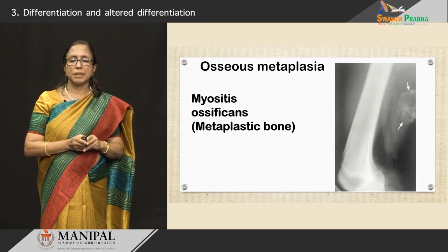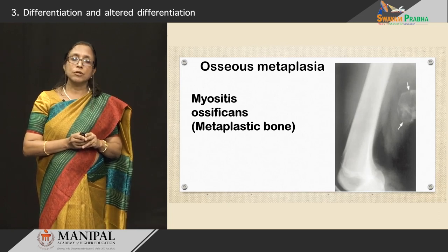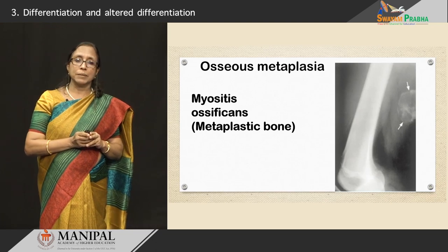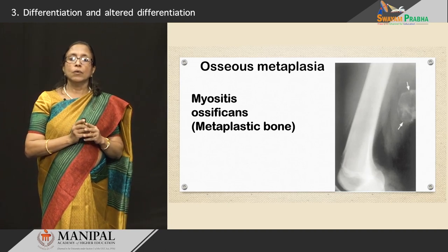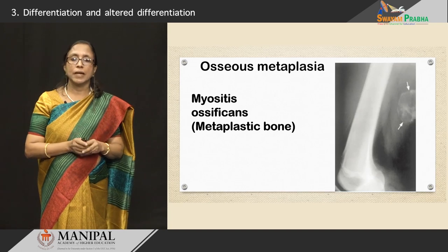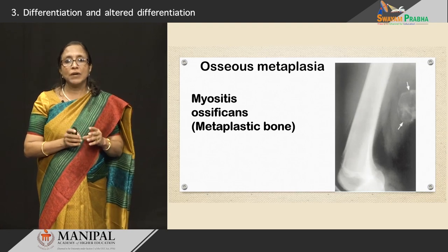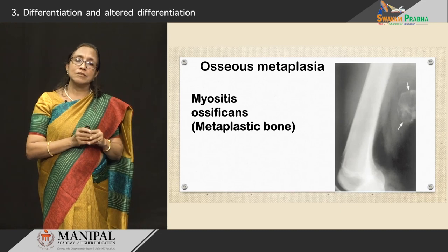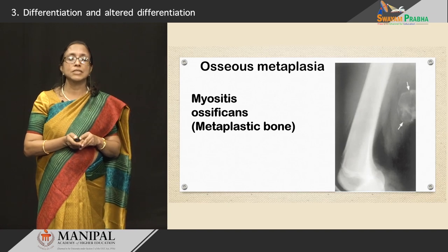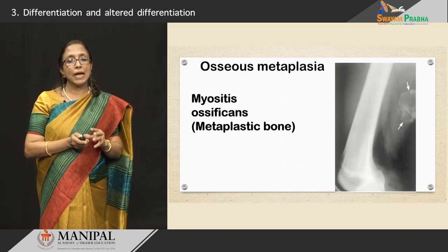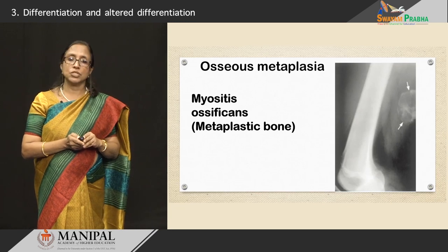Looking at mesenchymal metaplasia, an example is osseous metaplasia, and an example for that is myositis ossificans. Here it is a metaplastic bone. It can be seen in athletes and very active people where, in the proximity of the muscle and bone, there can be fibroblast proliferation which later gets calcified and then ossified. In the X-ray it is seen as a whitish area or mass — bone which has been replaced from fibrous tissue or fibroblasts. This is an example of osseous metaplasia.